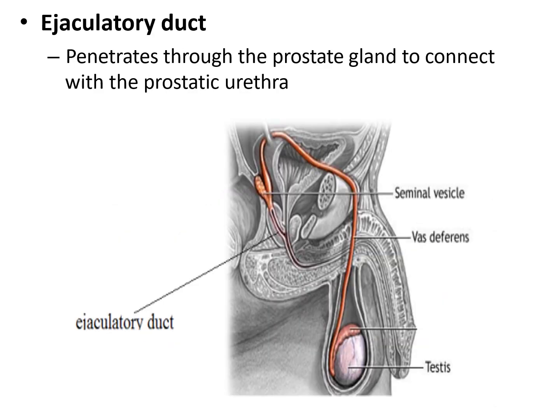About the ejaculatory duct: it penetrates through the prostate gland to connect with the prostatic urethra. This is the last portion of the internal structure of the testicle.